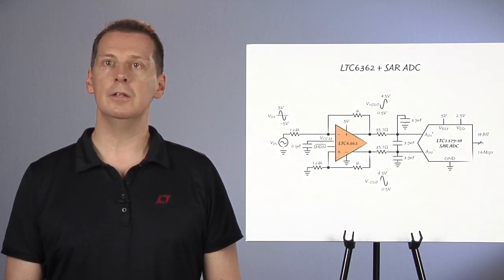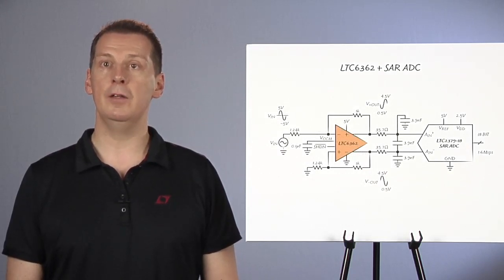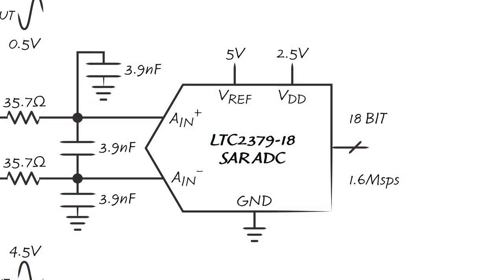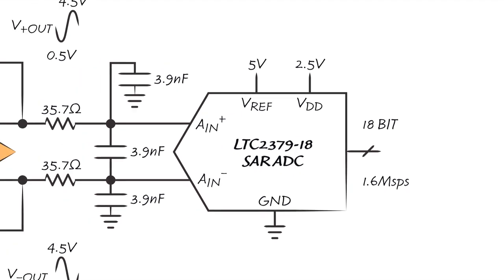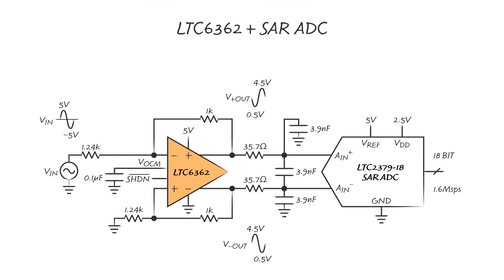You might think that differential op-amps are mainly for high-speed communication circuits. Nothing could be further from the truth. Linear Technology now has a family of SAR ADCs meant to digitize relatively low-speed signals at excellent DC accuracy, and with a signal-to-noise ratio of more than 100 dB. To achieve that level of performance, we need to drive a differential signal into the ADC.